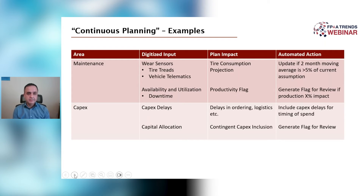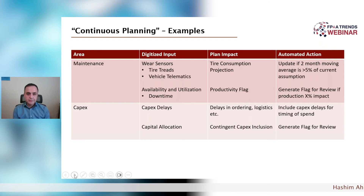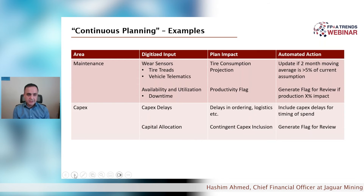On the maintenance side, we approached some very economical wear sensors and telematics that we installed on our vehicles. These monitor the availability and utilization of those vehicles. The planning part really came in whereby we took averages of those consumptions, and if the average for the past two months is more than five percent of our current assumption in the plan, by default the plan updates. So here you've created a loop whereby you're using smart technology and algorithms to update your plan without human intervention, making your plan more agile as well.